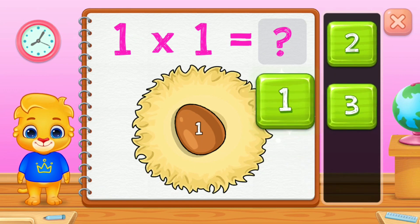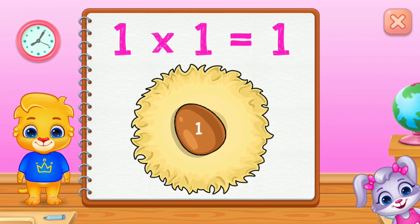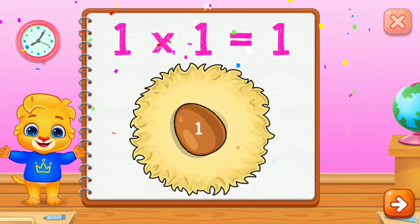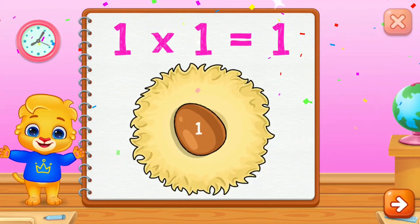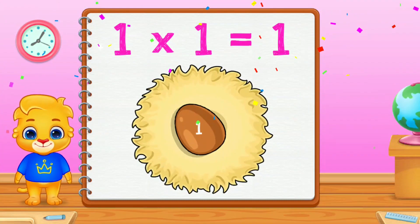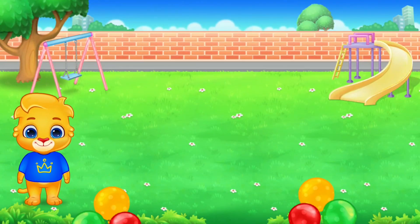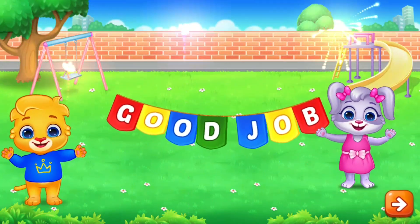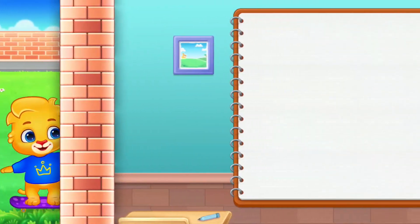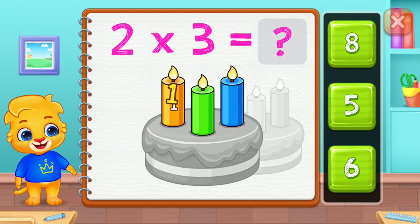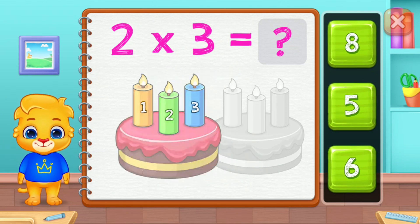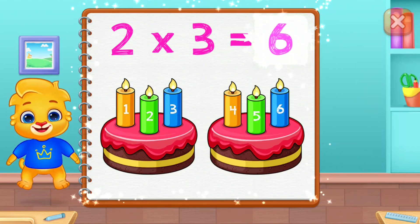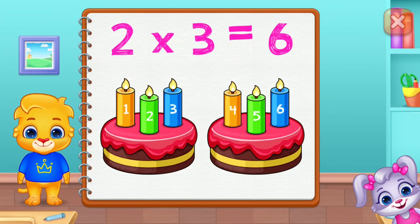1 group of 1 equals 1. 1, 2, 3, 4, 5, 6. 2 groups of 3 equals 6.